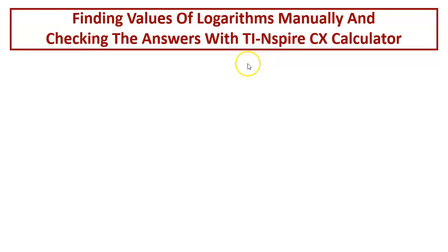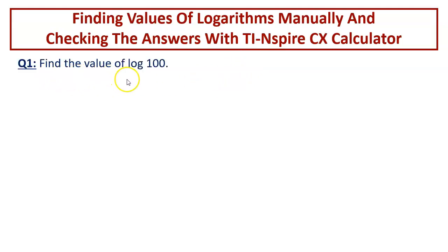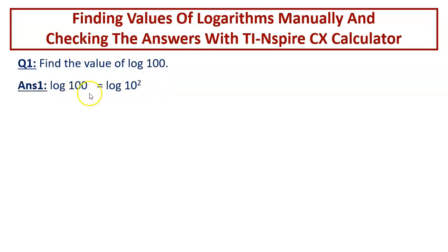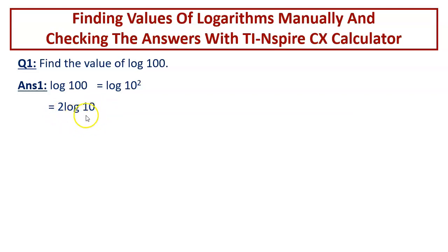Coming to the very first question: find the value of log of 100. Since the base is missing, obviously the base is equal to 10. Log of 100 can be written as log of 10 to the power of 2, base 10. So the 2 is the power which comes down to the coefficient place. We can write this as 2 times log of 10 to the base 10, which is equal to 1. It is 2 times 1, equal to 2. So log of 100 is equal to 2.